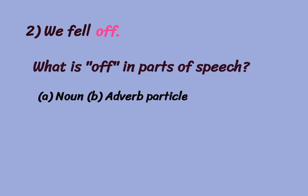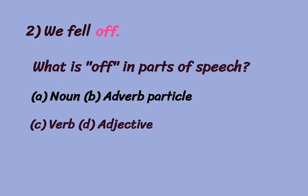The second sentence is 'We fell off.' What is 'off' in parts of speech? Off is actually an adverb particle. I have made a separate video on adverb particles — you can access the link in the description. In that video I have completely explained the difference between prepositions and adverb particles, and when a preposition is used as an adverb particle versus as a preposition. So off in this sentence is an adverb particle.